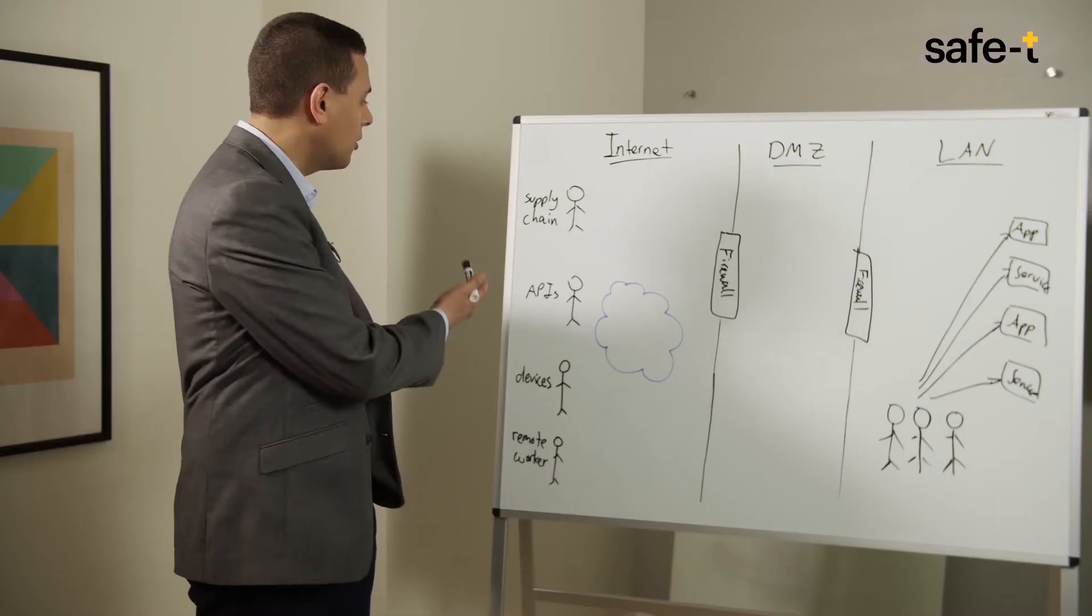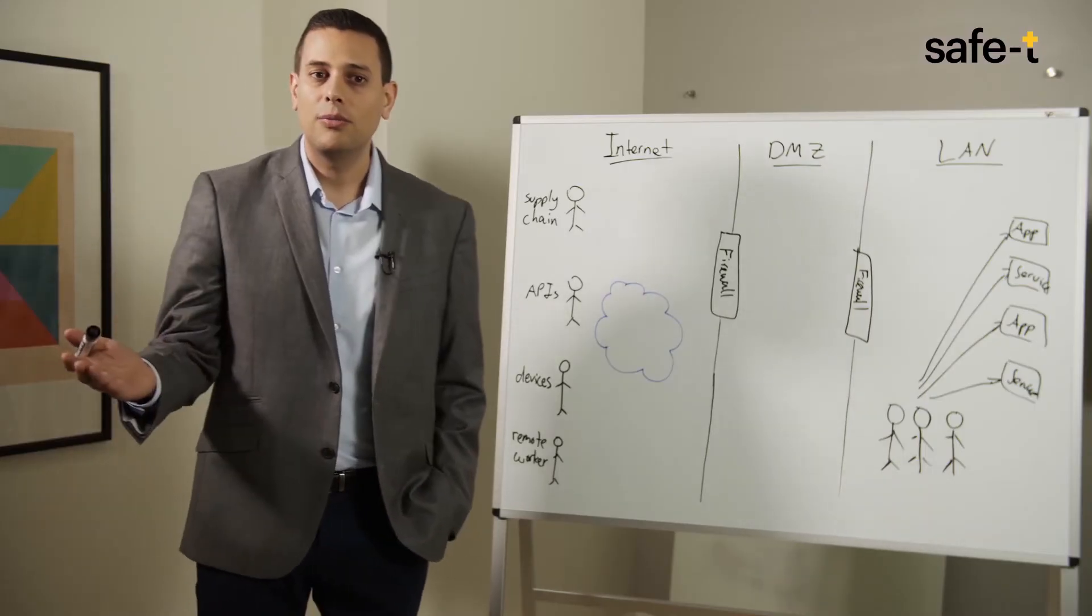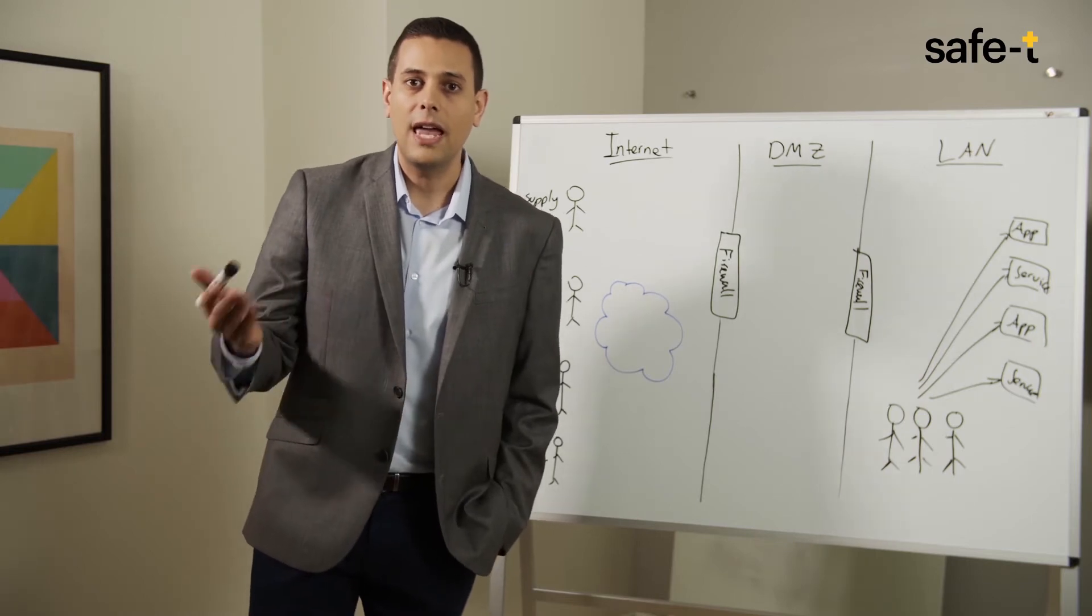And finally, we're not talking just about employees anymore. The number of constituents that need access to assets inside the corporate network has dramatically grown in a global business environment and now includes business partners, supply chain, service providers, connected devices, APIs, and more.